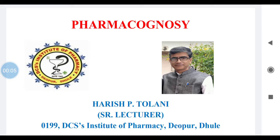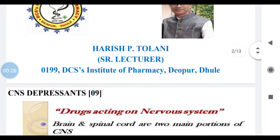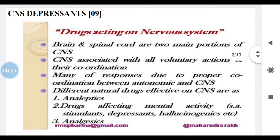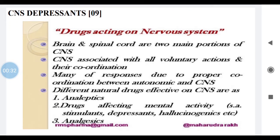In pharmacognosy, after covering adulteration and drug evaluation, the next topic is pharmacological groups. Today we will cover CNS depressants, also called drugs acting on the nervous system. In this category, nine drugs are there, and before studying the pharmacognostic study of these drugs, we will first see how these drugs exert their effect on the nervous system.